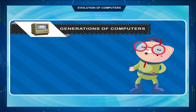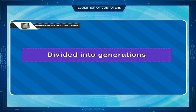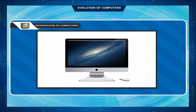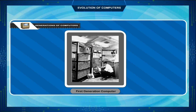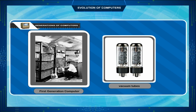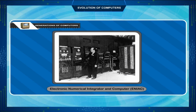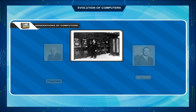Generations of Computers: The development in the field of computers has been divided into generations. With every passing generation, computers got better, faster and smaller. First generation computers had vacuum tubes and valves as the main electronic component. The first general purpose programmable electronic computer was the Electronic Numerical Integrator and Computer, ENIAC, built by J. Presper Eckert and John V. Mauchly at the University of Pennsylvania.